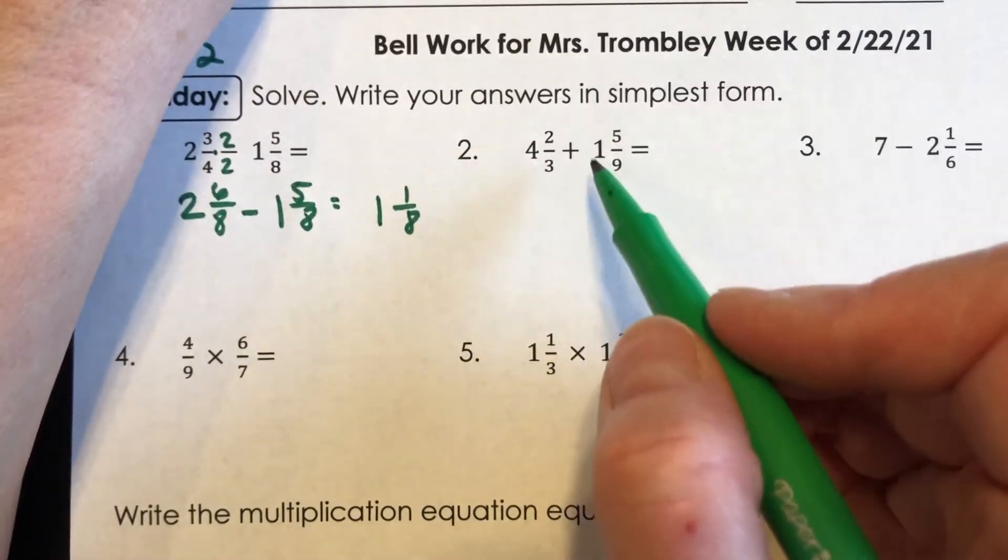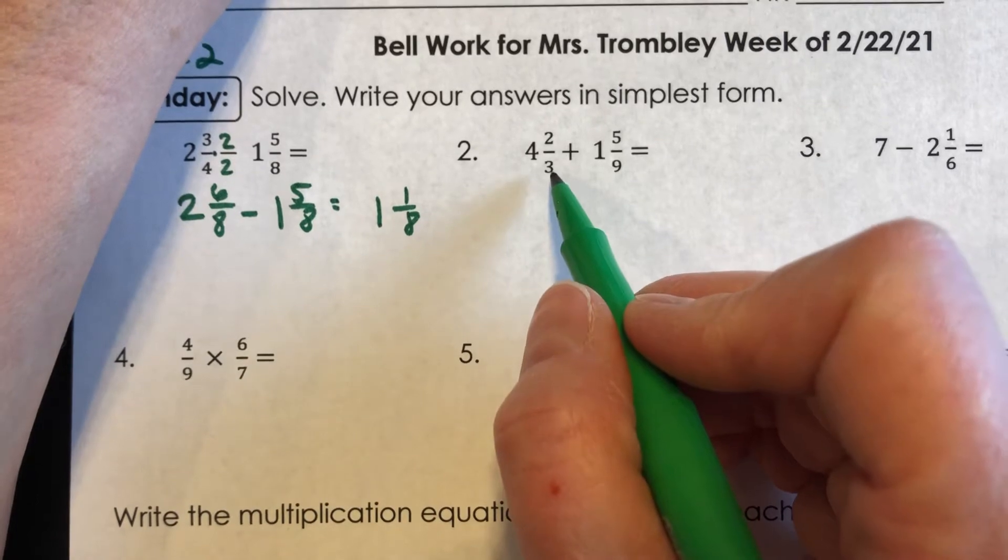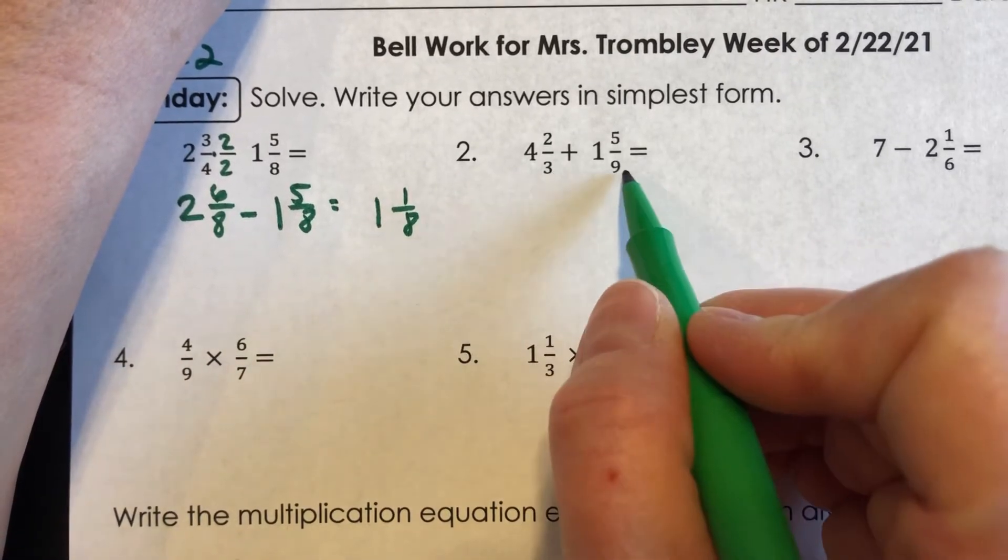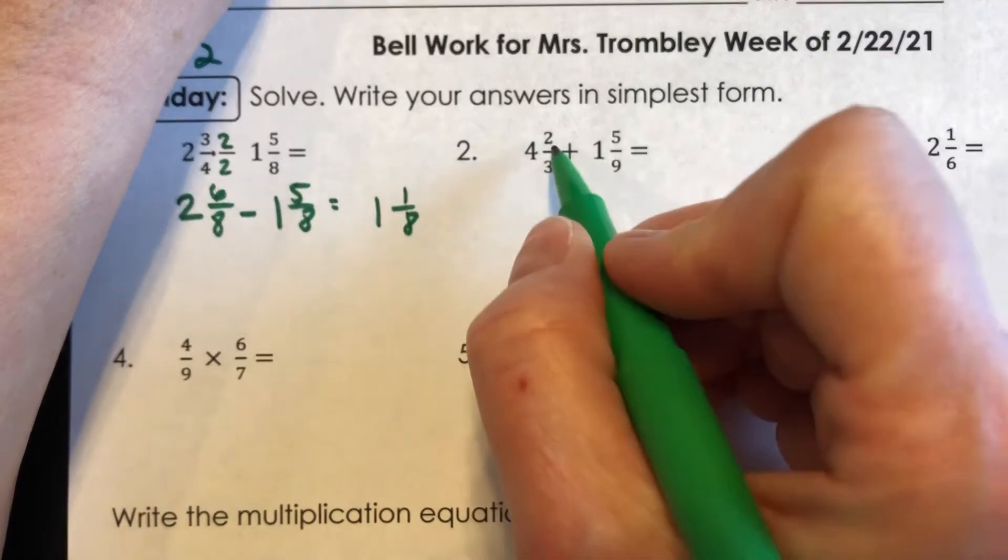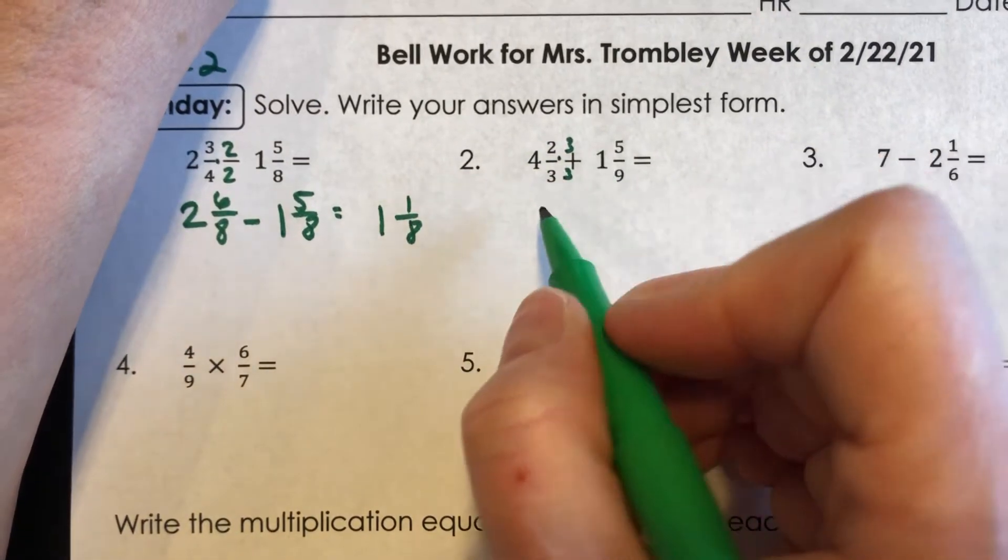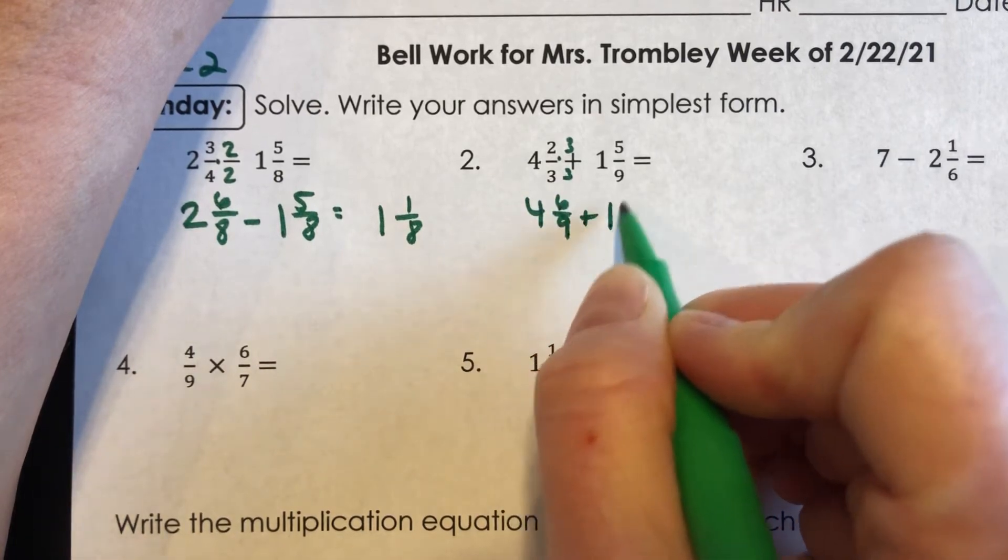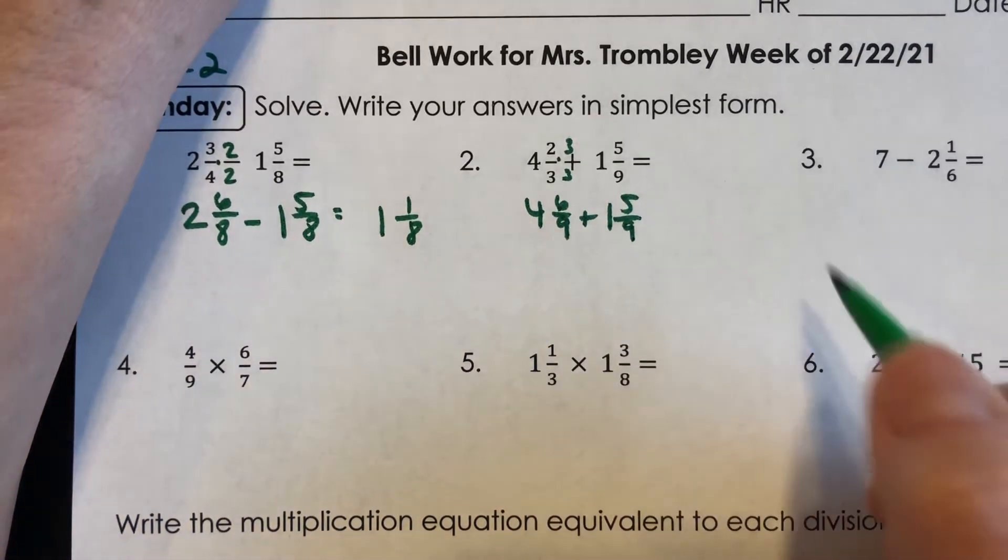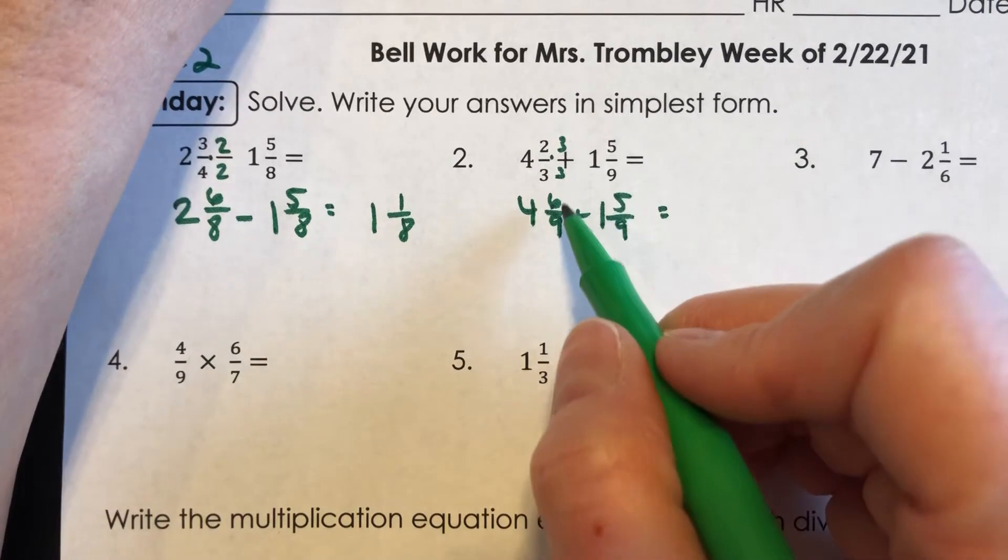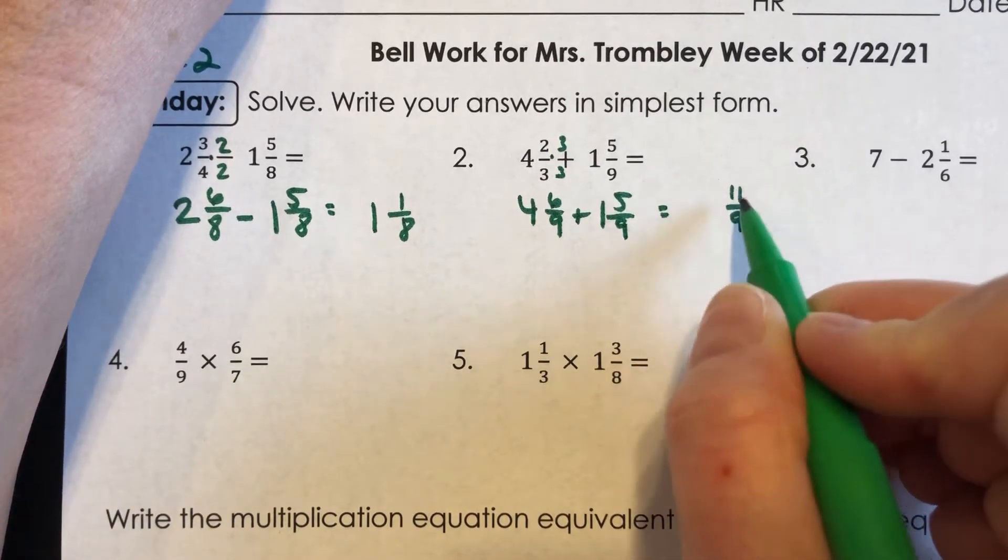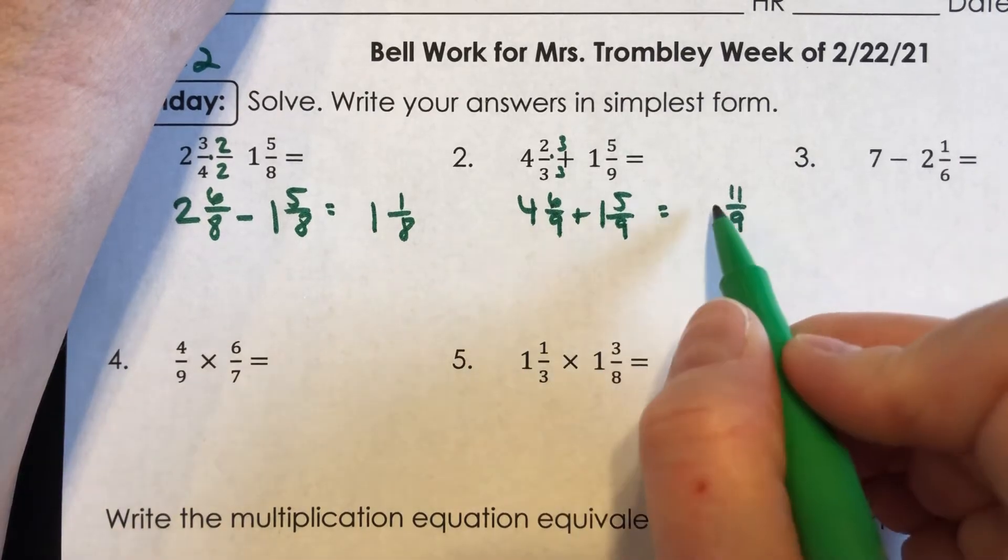For number two, I notice I am adding these fractions, and I do not have a common denominator. I can multiply three by three to get nine, though. So I'm going to go ahead and multiply both of those by three over three. So I have four and six-ninths plus one and five-ninths.